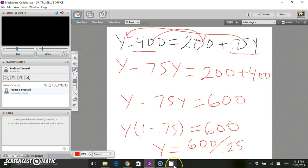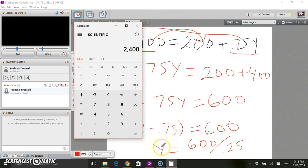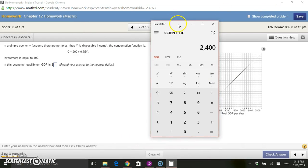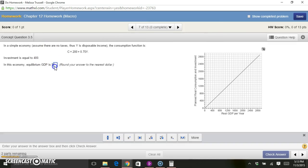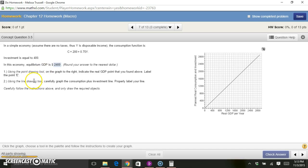I'll bring up my calculator and ask what this answer is. 600 divided by 0.25 gives me an answer of 2,400. So I know now that my equilibrium GDP, which is the GDP where GDP equals consumption plus investment, is 2,400. I'll go back and plug that into my homework question. So in this economy, the equilibrium GDP is 2,400.